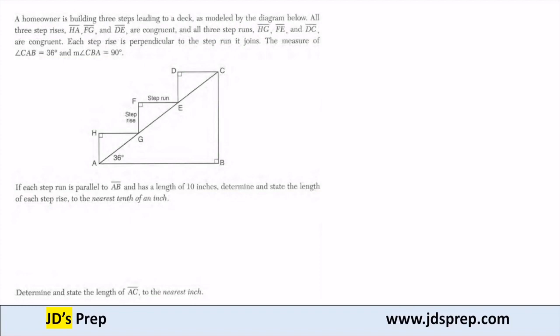If each step run is parallel to AB and has a length of 10 inches, so each one of these runs is 10, 10, 10, determine and state the length of each rise.